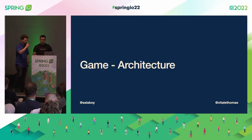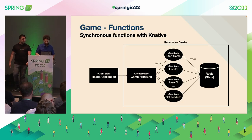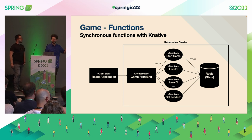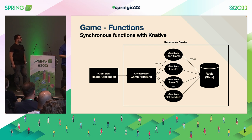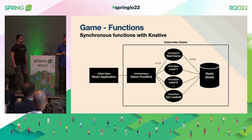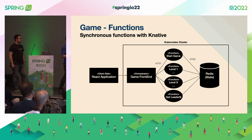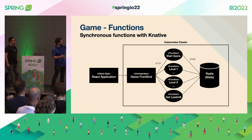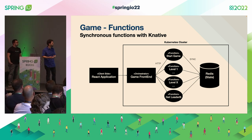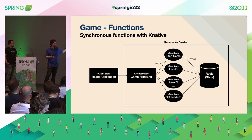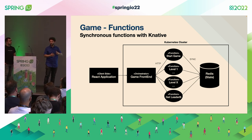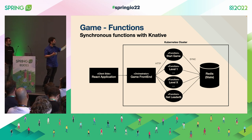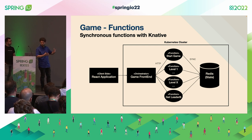Let's go back to the game and talk about the game architecture. We built this game to show the idea of having different functions doing different things. The game is built with a start-game function — every time you want to start playing, you call a function that creates a session for your user. Each question is implemented in a different function that evaluates the inputs you send — the answers you select. All of that runs in a synchronous fashion. The game frontend has all the logic to decide which function to call next based on the level you're at. The game frontend waits for the function to store data into Redis, get the score back, and send it to the user.